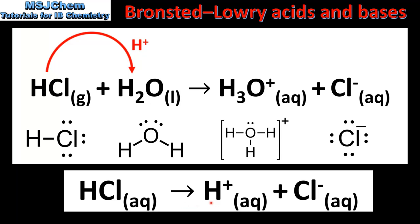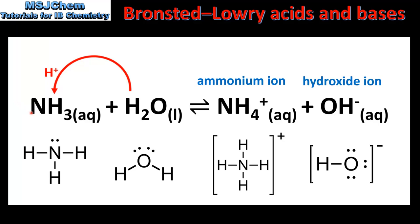In our last example we have the reaction between ammonia and water to produce the ammonium ion and the hydroxide ion. In this reaction the water molecule is donating a proton to the ammonia, which accepts the proton. So the water is acting as a Bronsted-Lowry acid and the ammonia is acting as a Bronsted-Lowry base. The ammonia uses the lone pair of electrons on the nitrogen atom to form a bond with the proton, producing the ammonium ion NH4+. By donating a proton, the water molecule forms the hydroxide ion.